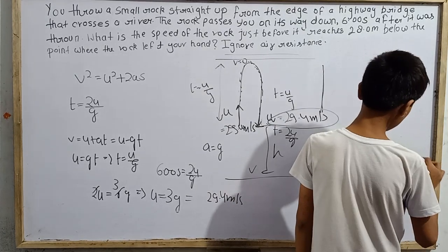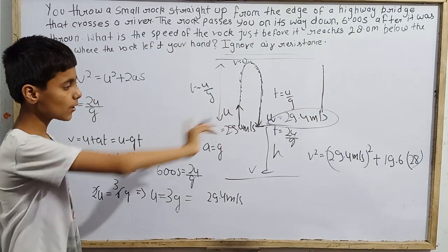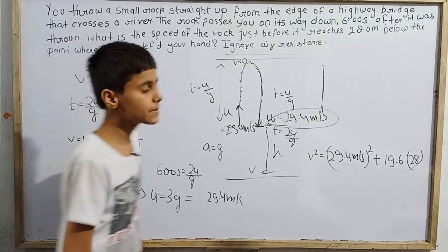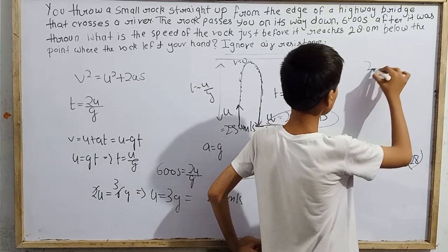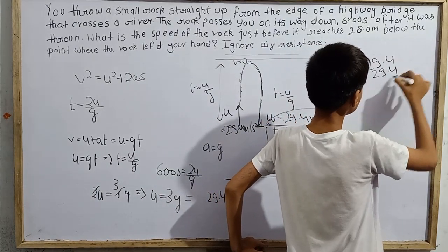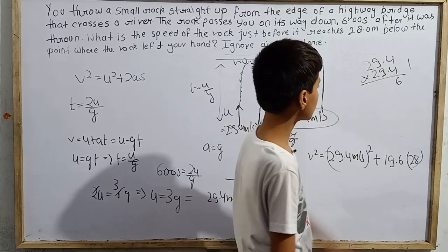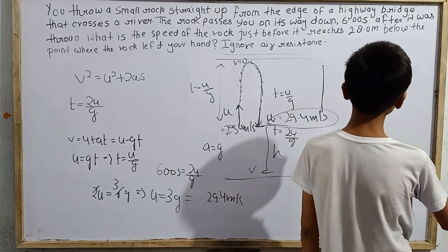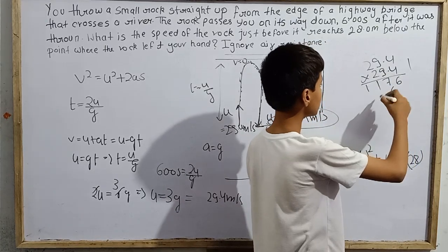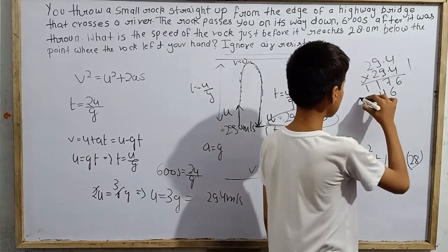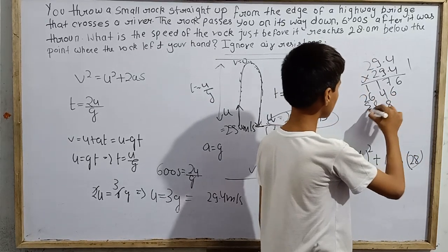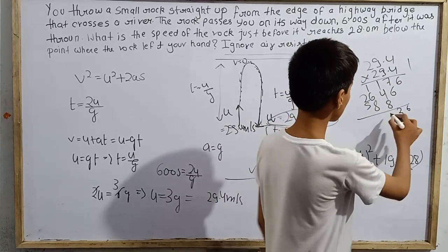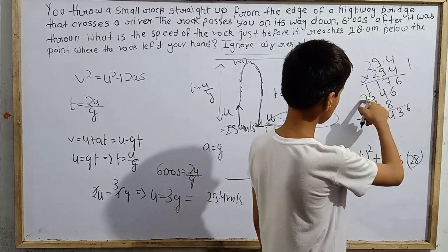If you wish you can take this approach too. Let's calculate 29.4 squared. 29.4 times 29.4: 4 times 4 is 16, carry 1. Working through the multiplication step by step, we get 864.36.